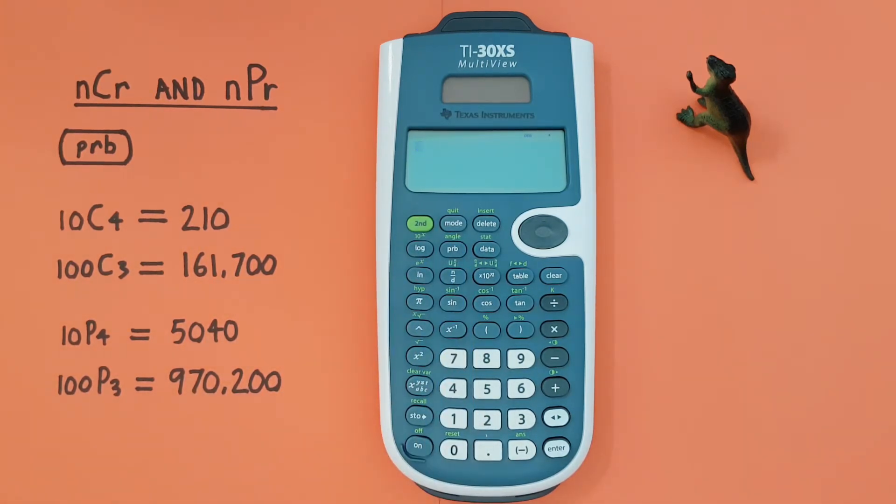First off, let's look at combinations, which is when you choose a number of items from a set and the order does not matter. For example, let's say we were given 10 choose 4.